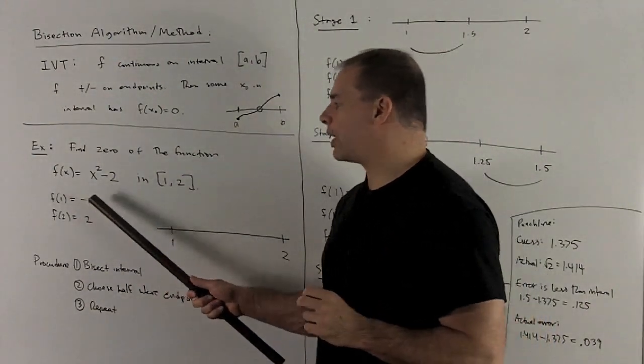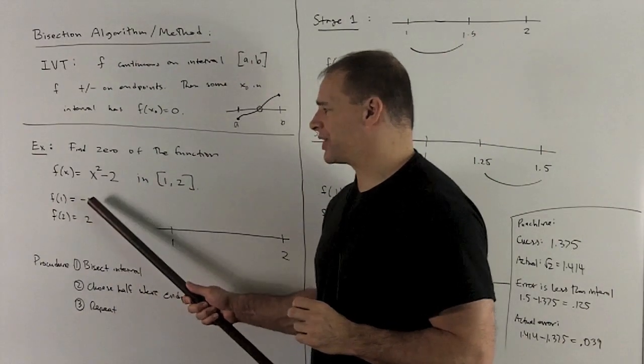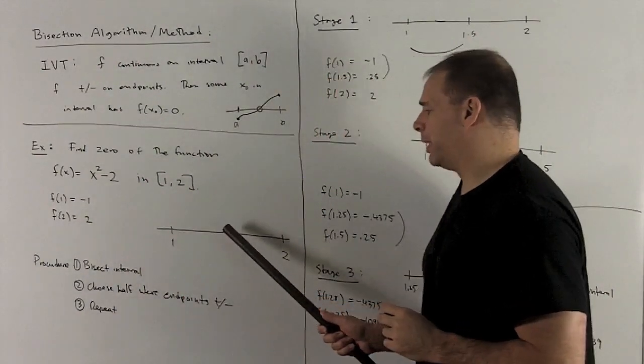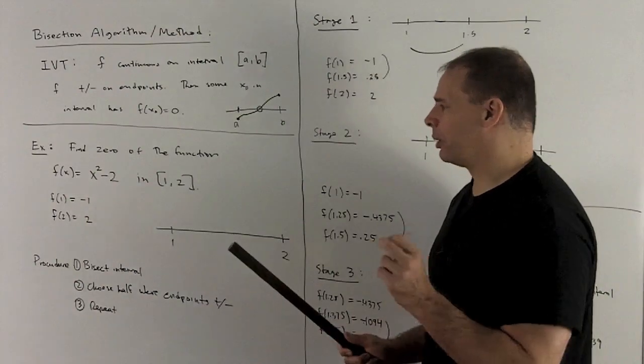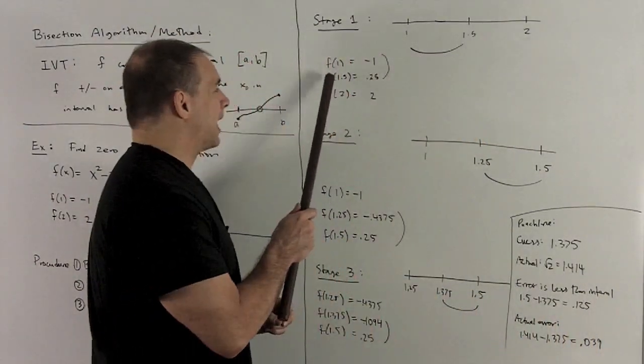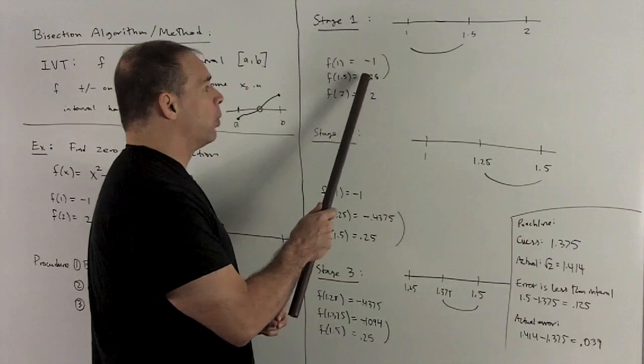So I'm going to have f(1) = -1, f(2) = 2. These have opposite signs. So I'm going to take the midpoint, which is 1.5, and we're going to apply f to that. When I apply f to 1.5, I'm going to get 0.25.